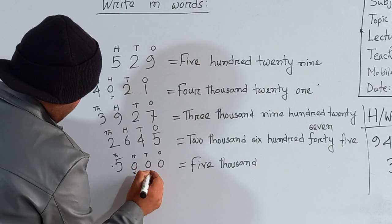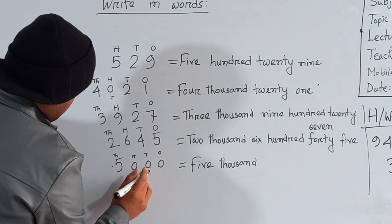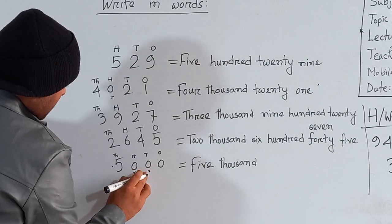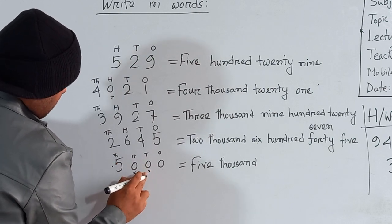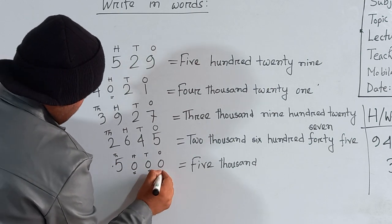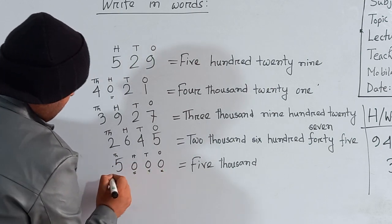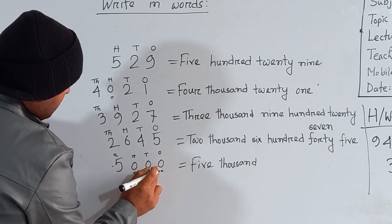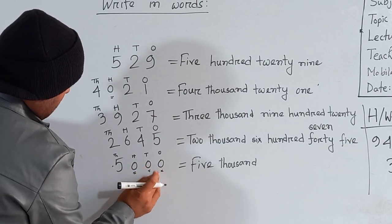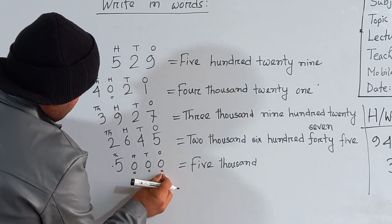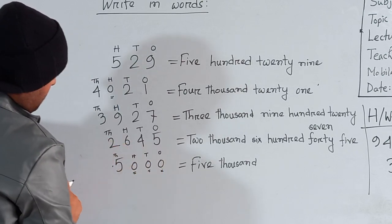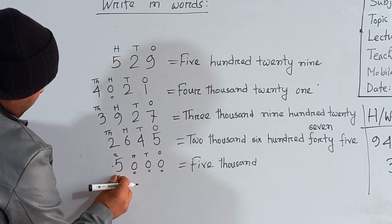How many hundreds are here? Zero hundreds — so you can skip this one. How many tens are here? Zero tens — so you can also skip this one. And how many ones are here? Zero ones — so we can also skip this one. So 5-0-0-0 is called five thousand.